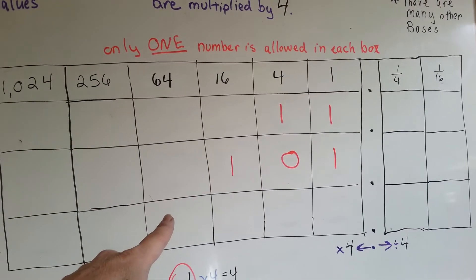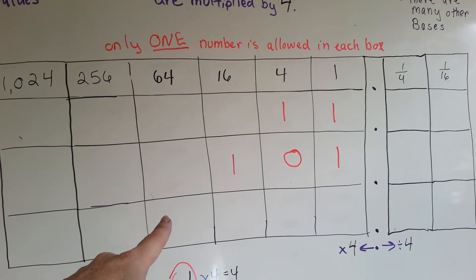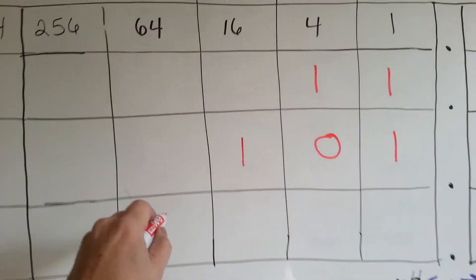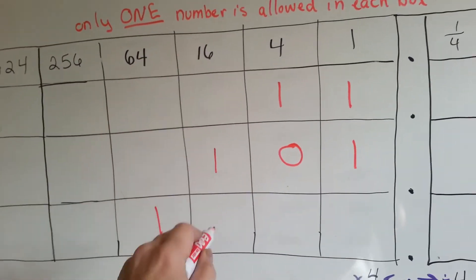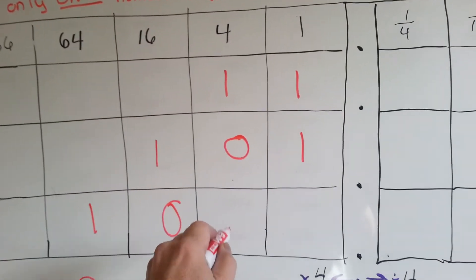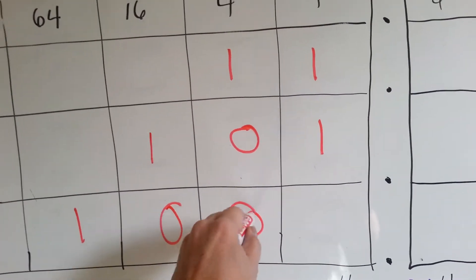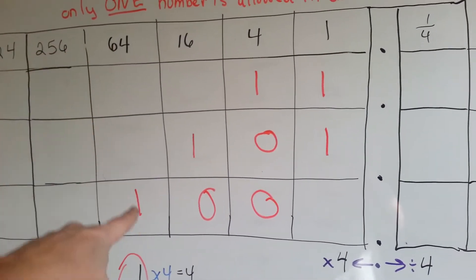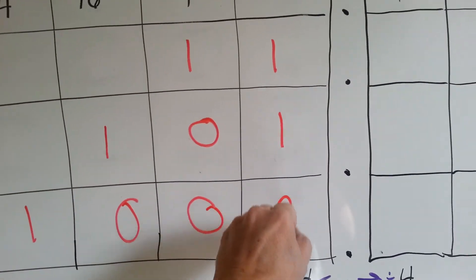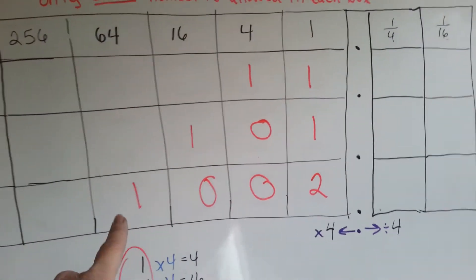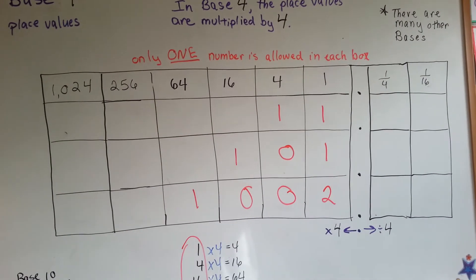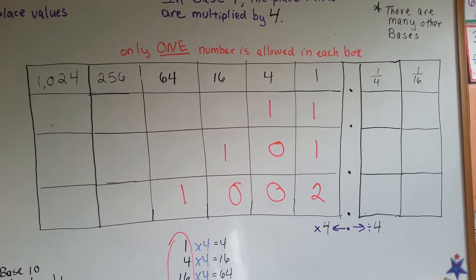How would you write the number sixty-six? You'd have a sixty-four, you'd have no sixteens. Now, remember, we're going for sixty-six. You'd have no fours. And because you got that one-sixty-four and we need to get to sixty-six, we need to add two more. So one-zero-zero-two is how you would write the number sixty-six in base four. Isn't that crazy?